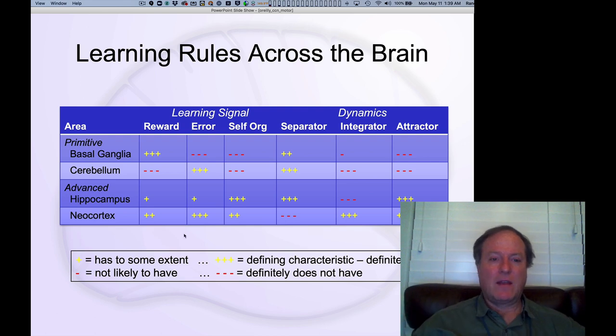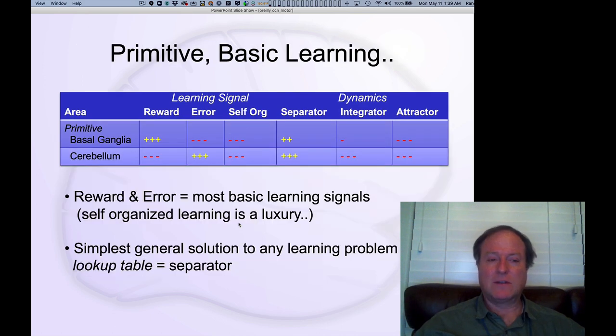And then the more advanced systems, the hippocampus and neocortex, come later. They're more developed in mammals, and that's what we're going to be talking about later. But in this chapter, we certainly focus on these primitive basic systems, the basal ganglia and the cerebellum.